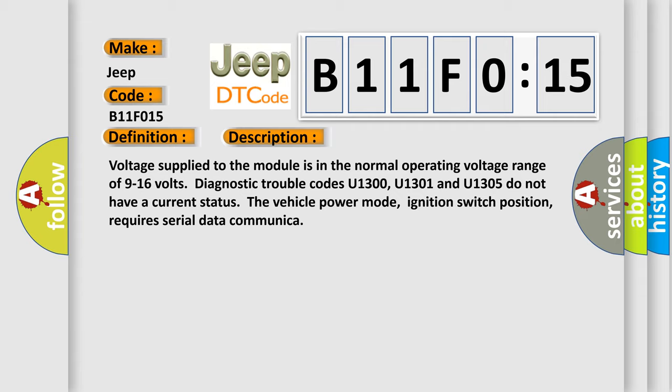Voltage supplied to the module is in the normal operating voltage range of 9 to 16 volts. Diagnostic trouble codes U1300, U1301, and U1305 do not have a current status. The vehicle power mode, ignition switch position, requires serial data communication.